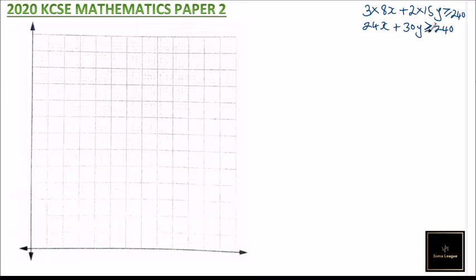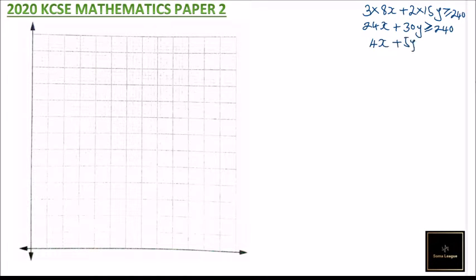We can simplify 24X + 30Y ≥ 240 by dividing through by 6, giving us 4X + 5Y ≥ 40. That is our first inequality.